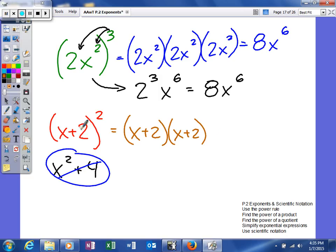We'd write it this way. When you multiply it out, you get x squared plus 2x, and then plus 2x again, and then plus 4. So that actually turns out to be x squared plus 4x plus 4.